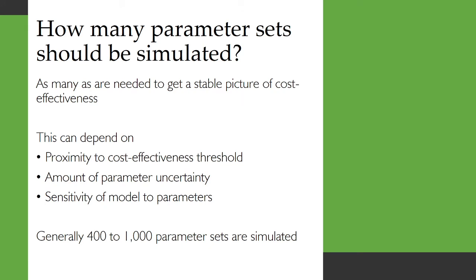How many parameter sets should be simulated in your PSA? As many as are needed to get a stable picture of cost-effectiveness, and this can depend on the proximity to the cost-effectiveness threshold, the amount of parameter uncertainty, and the sensitivity of the model to its parameters. Generally, 400 to 1000 parameter sets are simulated, but don't assume that these will be sufficient.